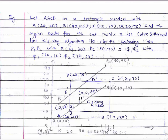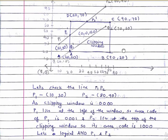We can roughly guess that line P1P2 partially goes through the clipping window, but to confirm we perform a logical AND operation on both endpoint region codes. The second line is Q1Q2 where Q1=(10,10) and Q2=(70,60), which lies inside the clipping window since the clipping window extends to (90,70).